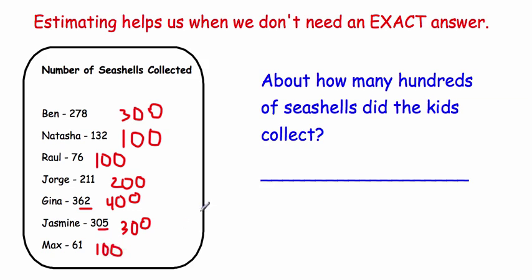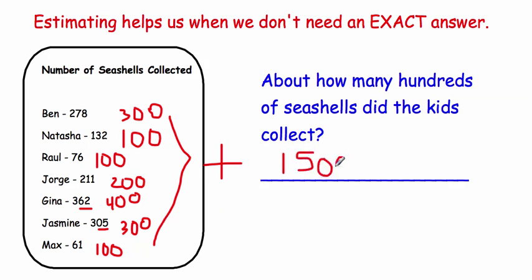Now that we have rounded to the hundreds, we just need to add up our hundreds, which is a lot easier to add. So 300 plus 100 is 400, plus 100 is 500, plus 200 is 700, plus 400 is 1,100, plus 300 is 1,400, and finally plus 100 is 1,500. So about how many seashells did the kids collect? About 1,500 seashells. This is just an estimate — the real-world application of estimation you'll use throughout your entire life.